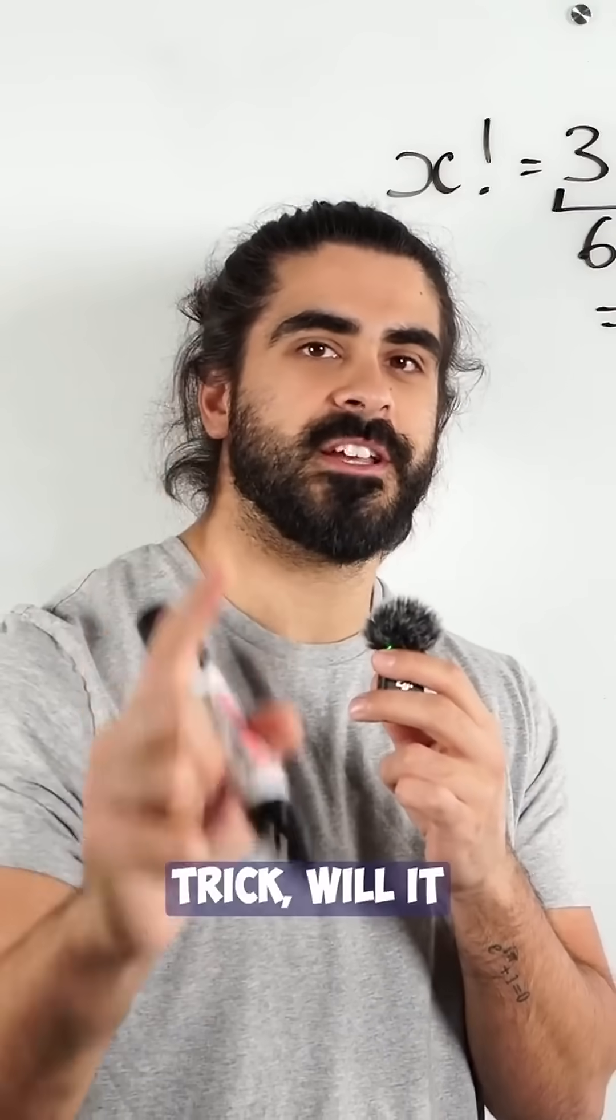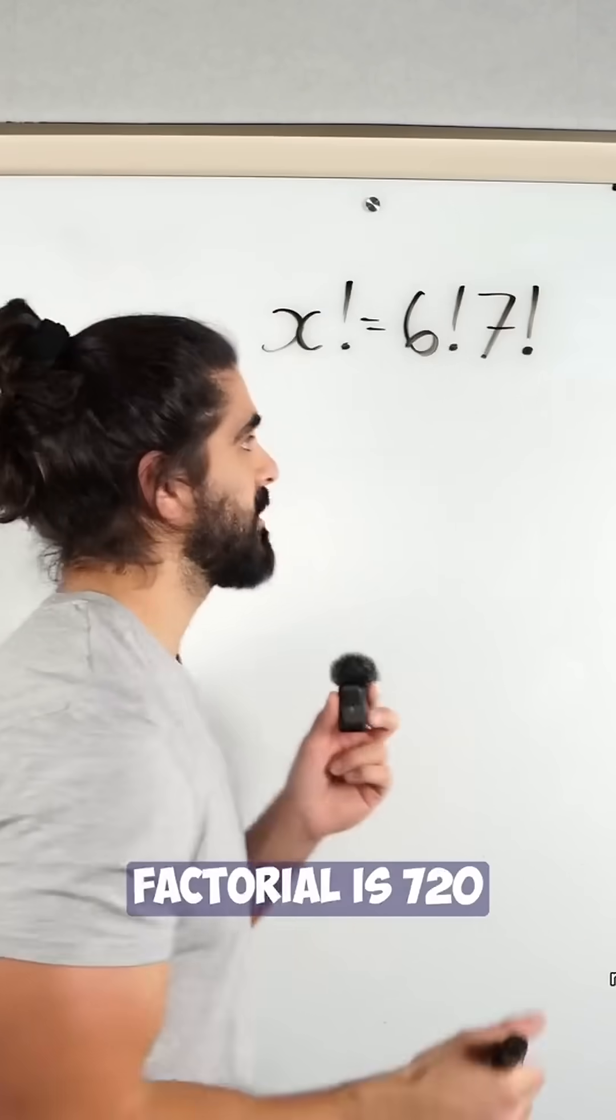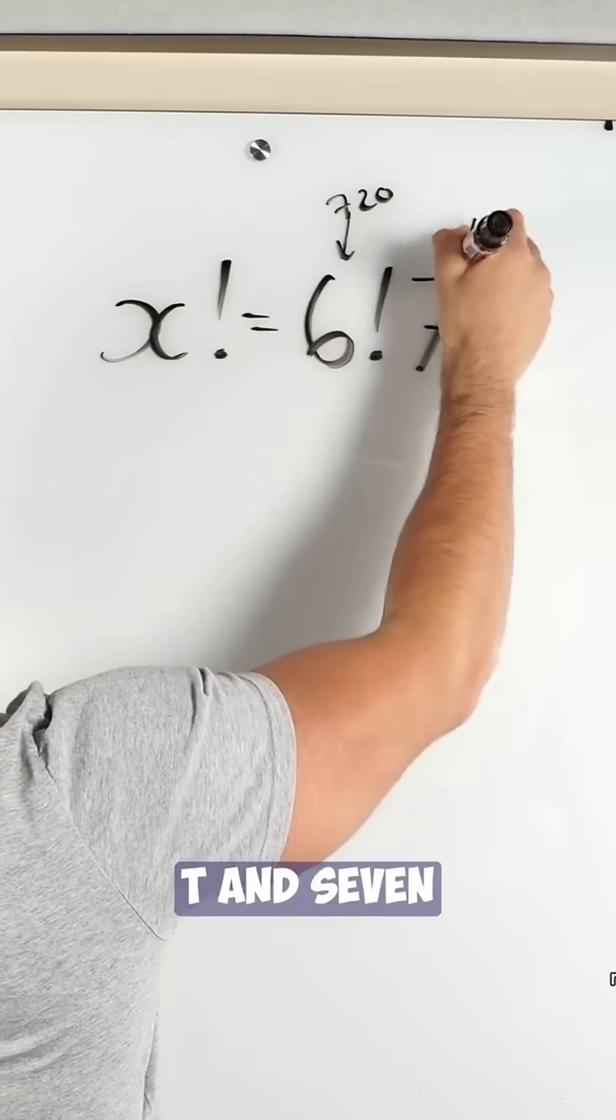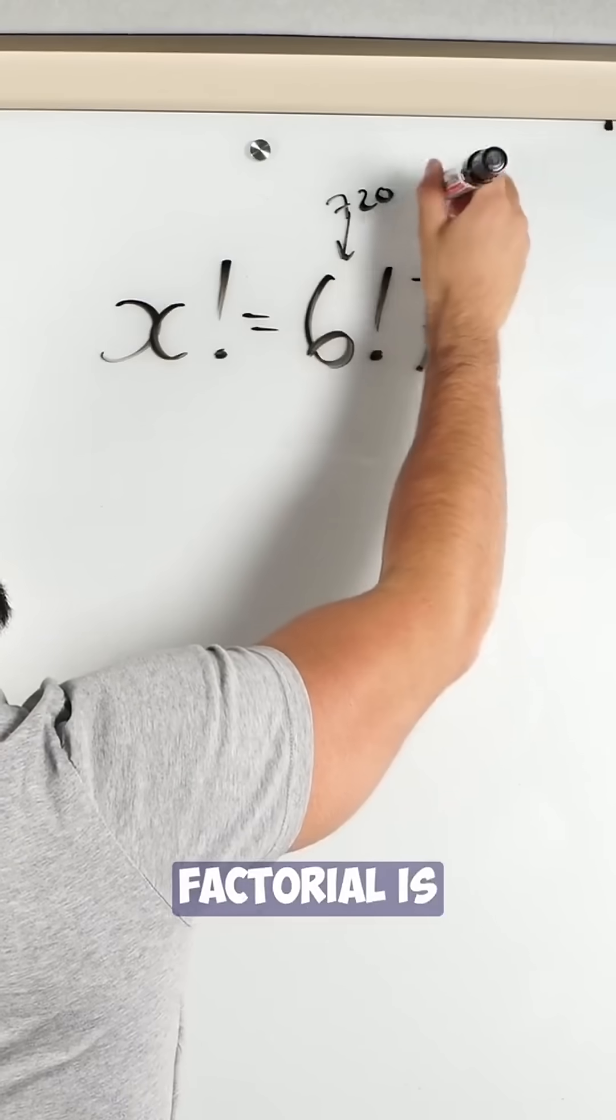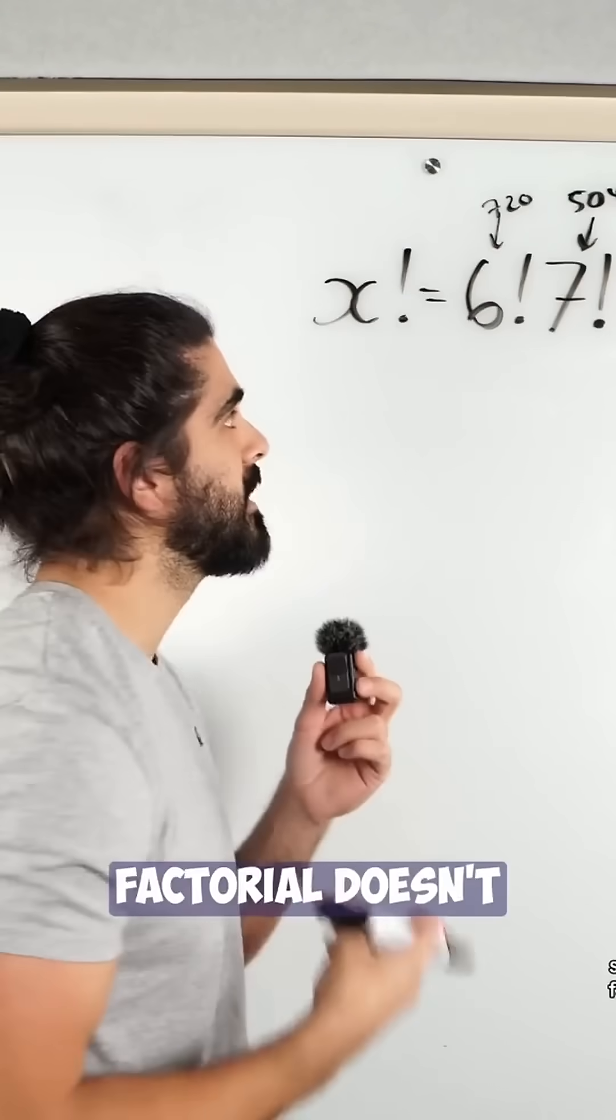However, will that quick trick work on this example? Now, 6 factorial is 720 and 7 factorial is 5040. So that trick with the 3 factorial doesn't work here.